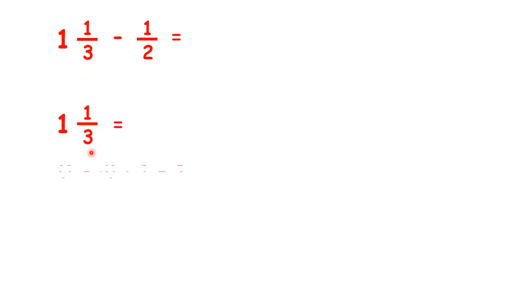We change our mixed number to an improper fraction, so we have 4 thirds. But now we still have denominators of 3 and 2, and we need the denominators to be the same. So we need to change both fractions.